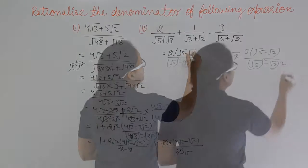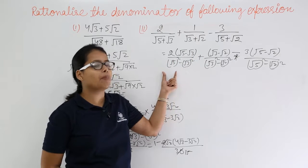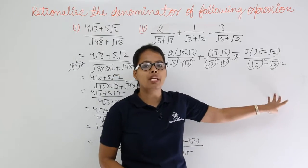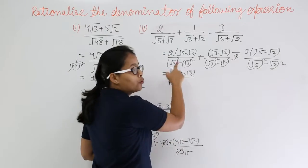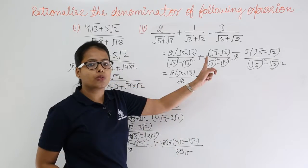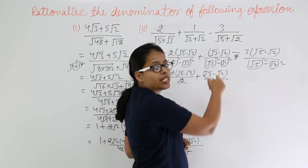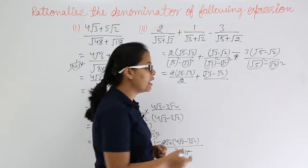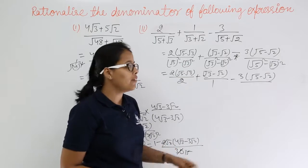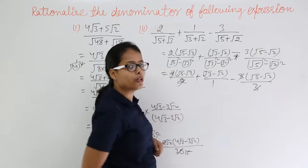Let's directly write it. I have rationalized the denominator, then multiplied the numerators and multiplied the denominators in the form of (a + b)(a − b), so I have directly written the a² − b² form in all these denominators. Now let's solve further: (√5)² = 5, (√3)² = 3, and 5 − 3 = 2. Keeping (√3 − √2) as is. Then (√5)² − (√2)² gives 5 − 2 = 3. Here 3 will cancel 3 and 2 will cancel 2.